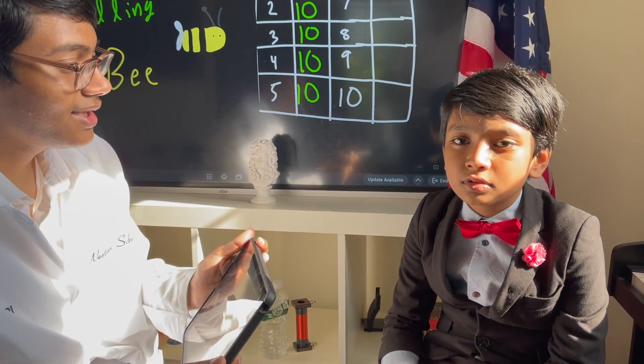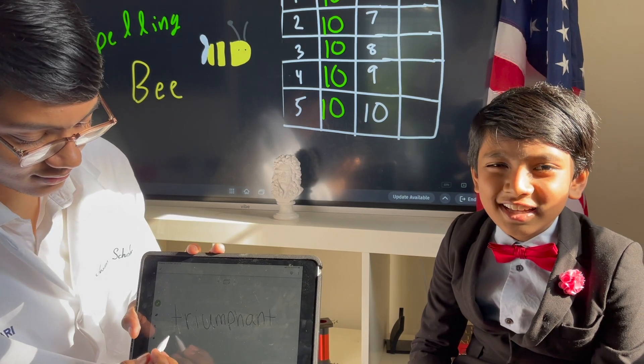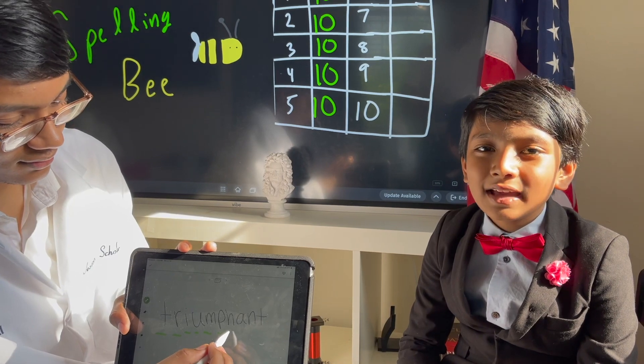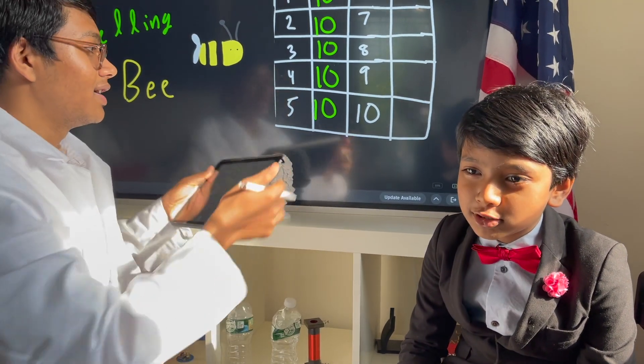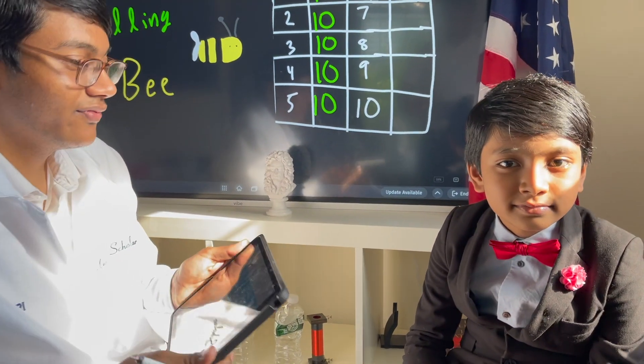Next word is a little bit easier. Yeah. Triumphant. Wait. Isn't that harder? T-R-I-U-M-P-H-A-N-T. That's right. Triumphant. 10 points. You are triumphant. Nice.